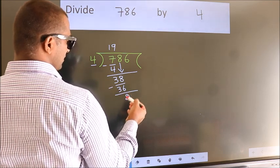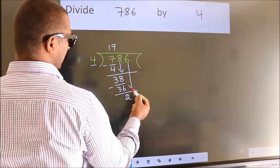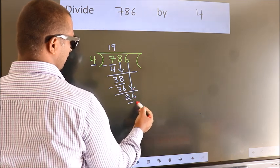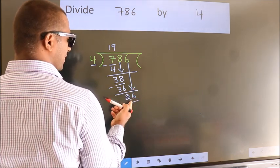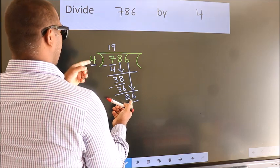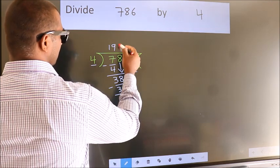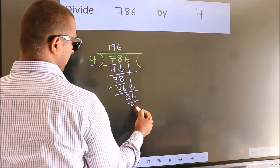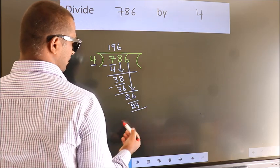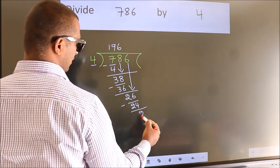After this, bring down the beside number. So, 6 down, making 26. A number close to 26 in the 4 table is 4 sixes 24. Now, we subtract and get 2.